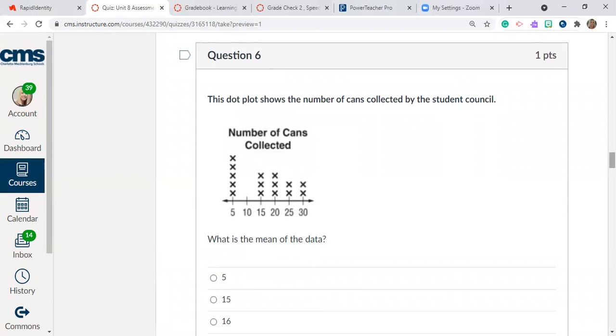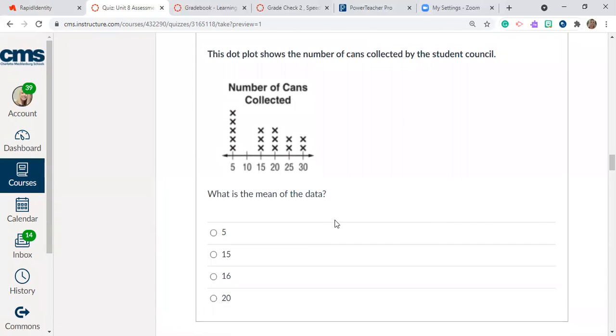Question number six. This dot plot shows the number of cans collected by the student council. So here's the number of cans collected. We have 5, 10, 15, 20, 25, and 30. What is the mean of the data? What is the mean of the data? 5, 15, 16, or 20?